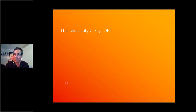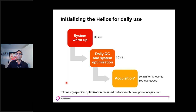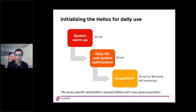Let's discuss the simplicity of CyTOF. I will discuss how the Helios mass cytometer is a straightforward instrument for daily use. The workflow for initializing the Helios involves the system warming up for about 30 minutes, followed by automated daily QC and system optimization. At this point the system is ready for sample acquisition. Note that there are no assay-specific optimization steps prior to sample acquisition — once the instrument is optimized, any cell type or tissue sample can be acquired using the same configuration.